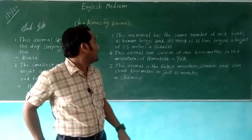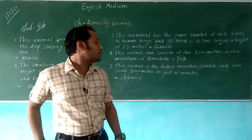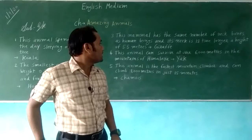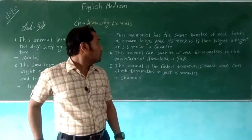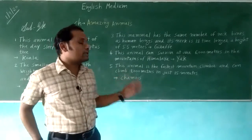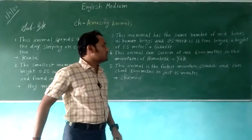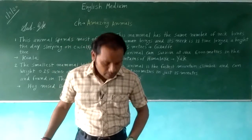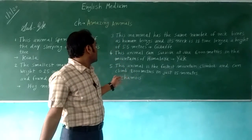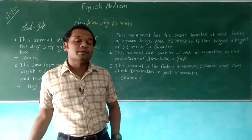So to recap: the giraffe is the tallest animal, 18 times longer with a height of 5.5 meters. The yak can survive at over 6,000 meters in the mountains of the Himalayas. And the fastest mountain climber can climb 1,000 meters in just 15 minutes.